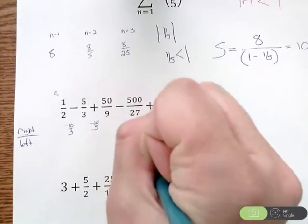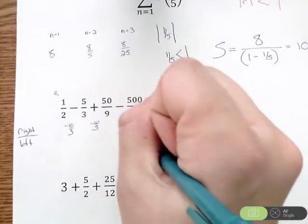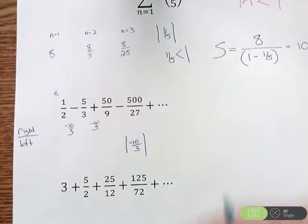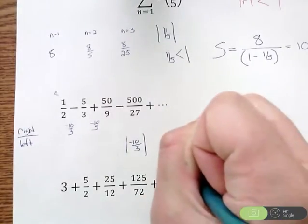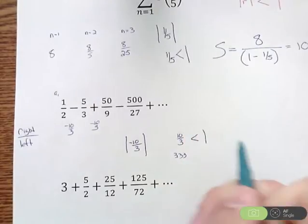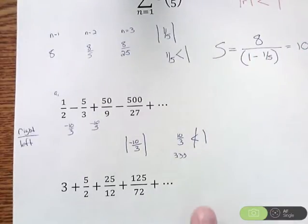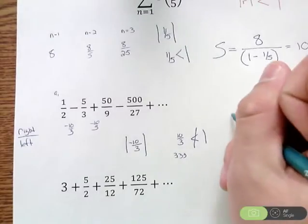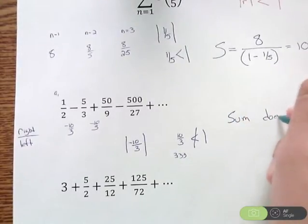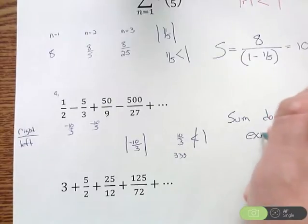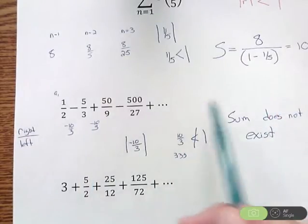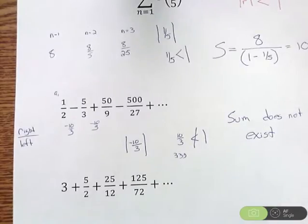We're going to take the absolute value of negative 10/3. If you do that, you get 10/3, which was 3.33. We want that to be less than 1. Well, 3.33 isn't less than 1. So what happens here is we actually can't do anything, and all you do is say the sum does not exist. What that means is the sum, as you add up more terms following that pattern, gets bigger and bigger, and it never really approaches a number. It just keeps on growing. So you're never going to find an actual sum there. The sum does not exist.